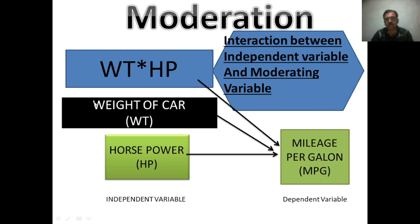So all three variables — horsepower, moderator weight, and interaction — will be predicting mileage. When this interaction, that is weight into horsepower, is significant, we can say that weight is acting as a moderator. And if the coefficient is positive, we can say that weight has a positive effect on the relationship between horsepower and mileage. So this is the concept.